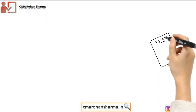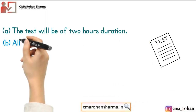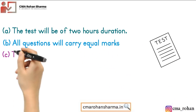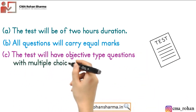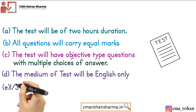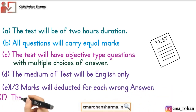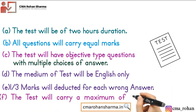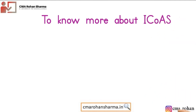Scheme of the test: A. The test will be of 2 hours duration. B. All questions will carry equal marks. C. The test will have objective type questions with multiple choices of answer. D. The medium of test will be English only. E. One third marks will be deducted for each wrong answer. F. The test will carry a maximum of 300 marks.